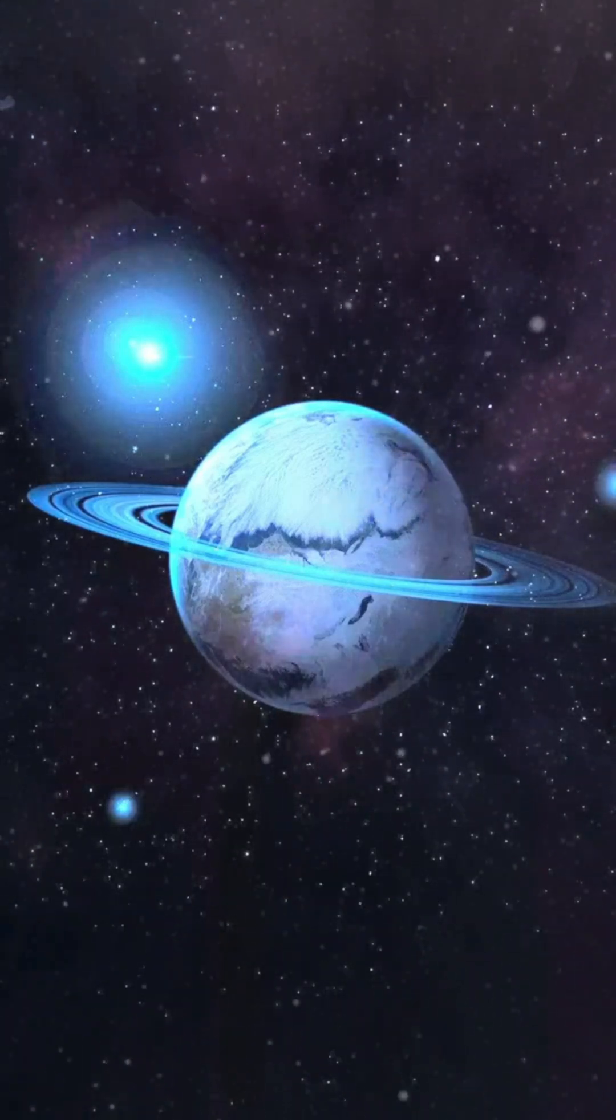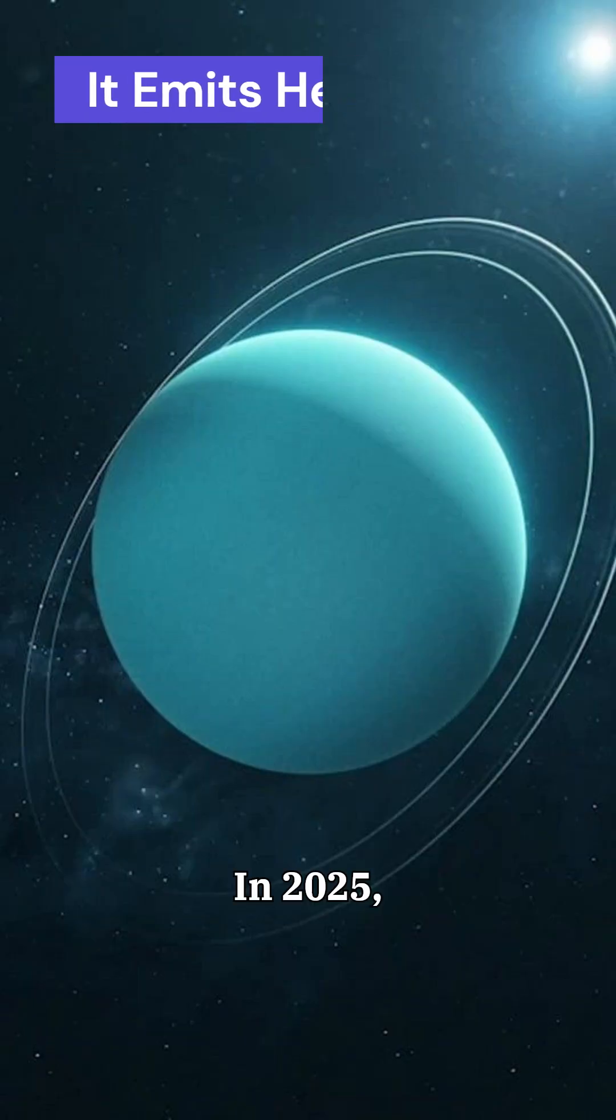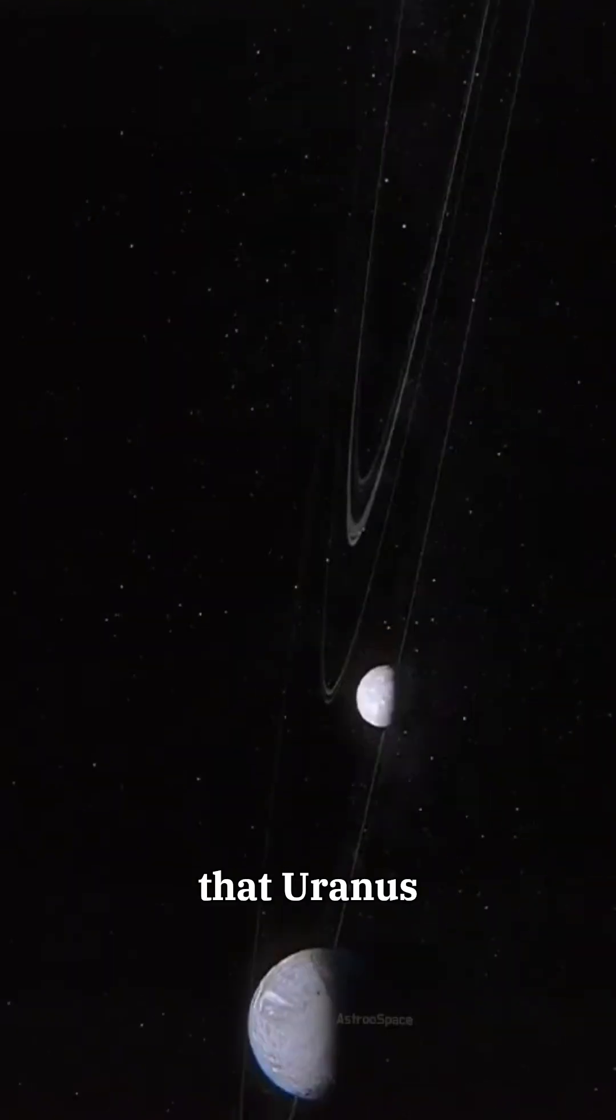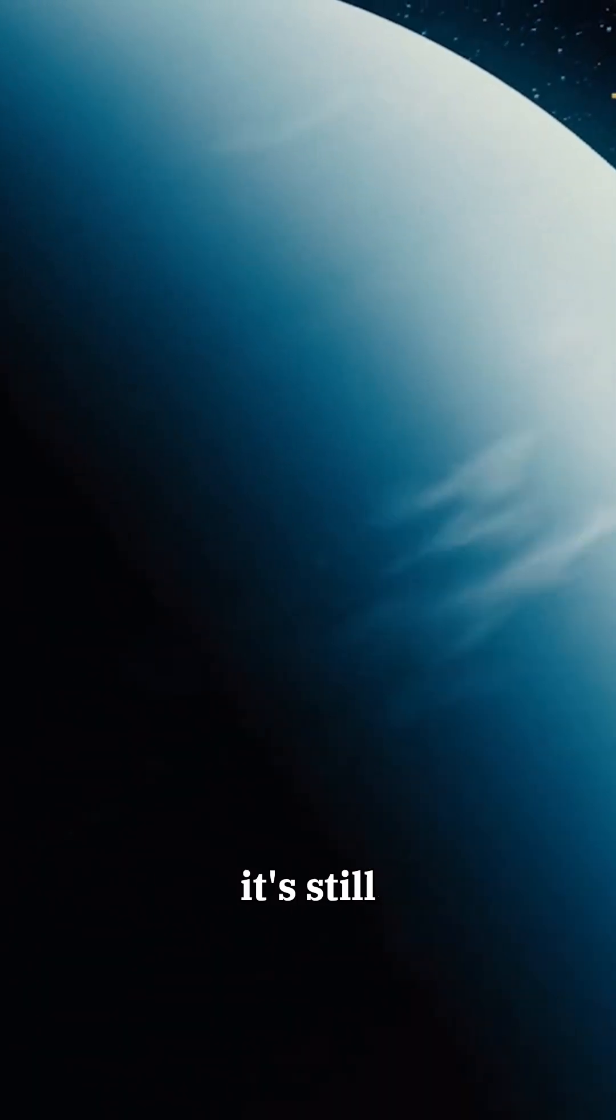For insane facts about Uranus which you have never heard before. Number 1. Uranus actually emits heat. In 2025, astronomers discovered that Uranus actually emits more heat than it receives from the Sun, which is about 12.5% more. That means deep inside, it's still holding on to ancient heat from when the planet was formed.